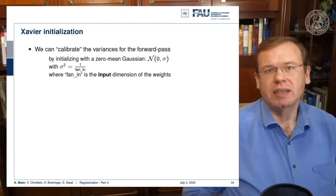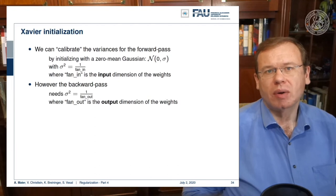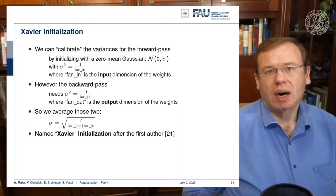As a result, we can then work with Xavier initialization. So we calibrate the variances for the forward pass by initializing with a zero mean Gaussian, and we simply set the standard deviation to 1 over fan in, where fan in is the input dimension of the weights. In the backward pass, however, we would need the same effect backward. So we would have to scale the standard deviation with 1 over fan out, where fan out is the output dimension of the weights. So you just average those two and compute a new standard deviation. This initialization is called after the first author of 21.